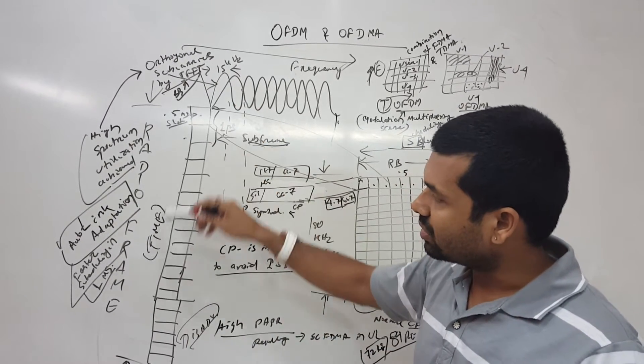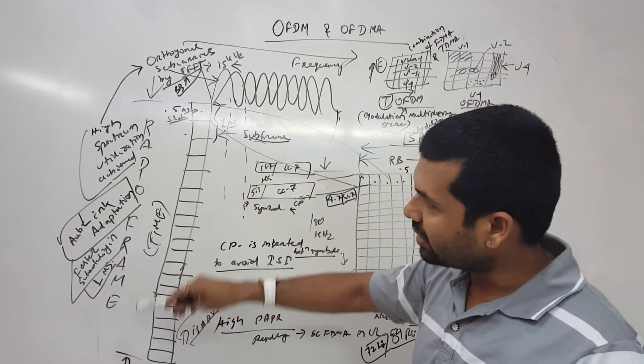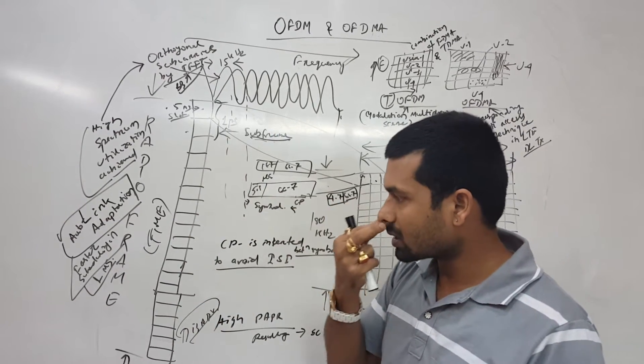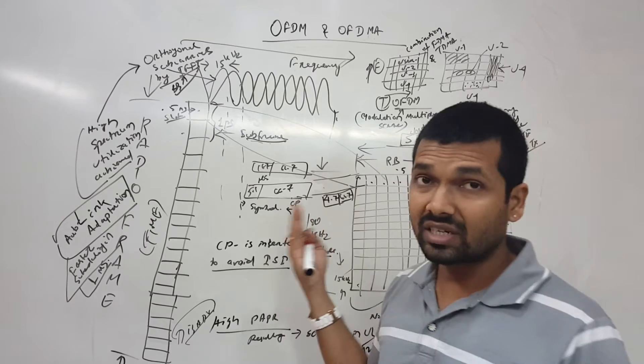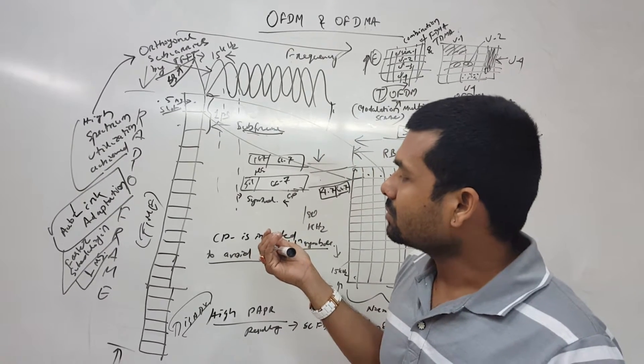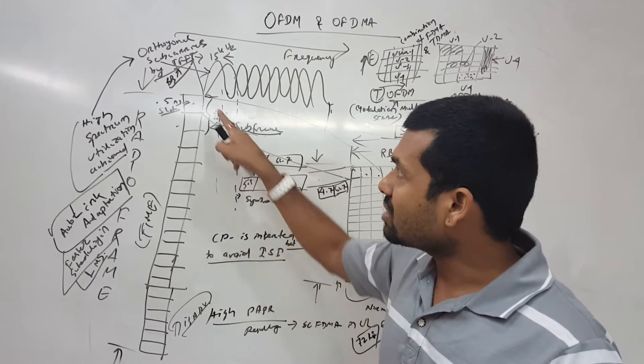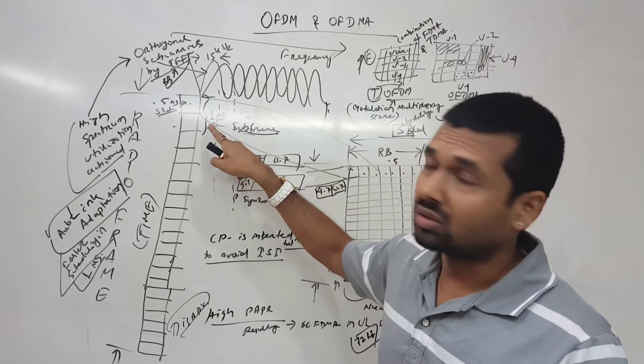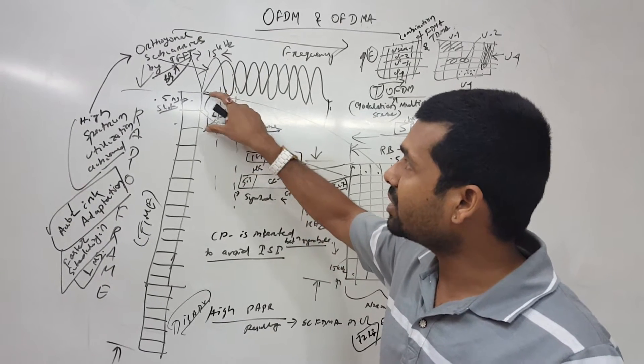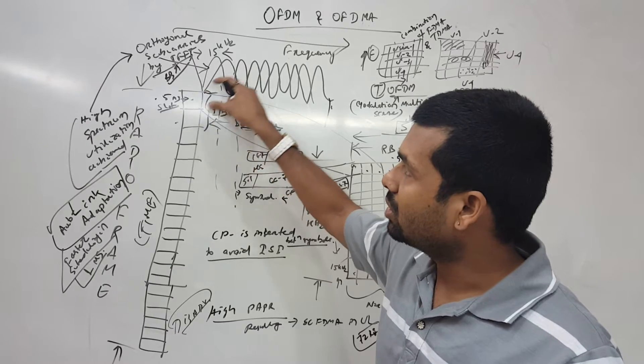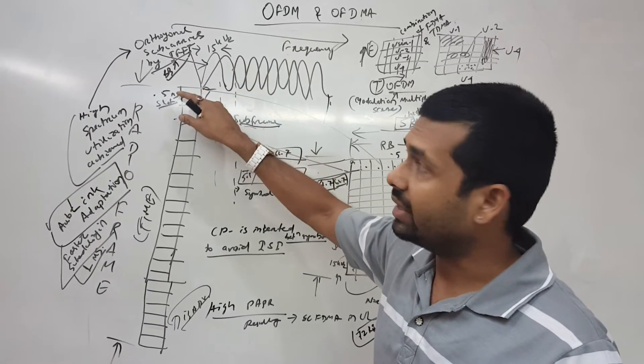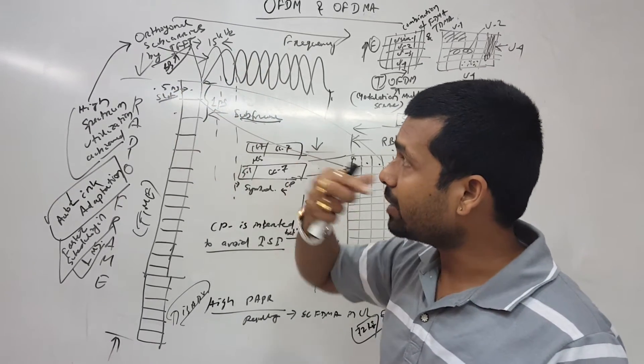This is the radio frame on the time axis I have written here. One radio frame is 10 milliseconds long and one subframe is one millisecond long. In one millisecond we are having two slots, each slot having 0.5 milliseconds.